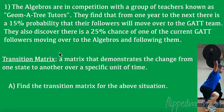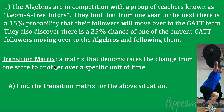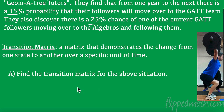First, we're going to talk about what a transition matrix is. A transition matrix is a matrix that demonstrates the change from one state to another over a specific unit of time. Looking at our information, we have 15% moving one way and 25% the other — not a lot of information, but we can get a lot from that.